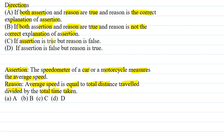Statement C. If assertion is true but reason is false. D. If assertion is false but reason is true.